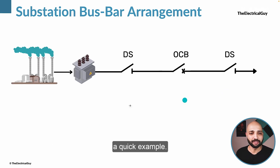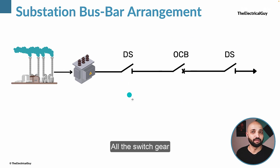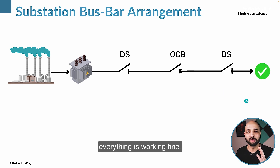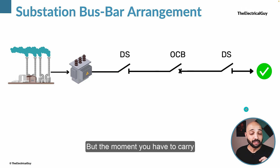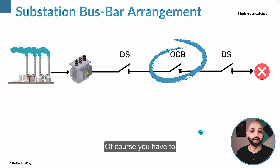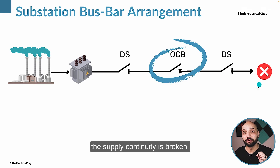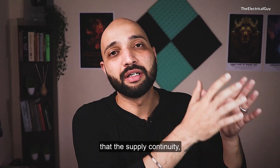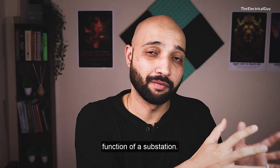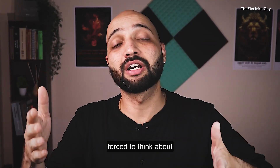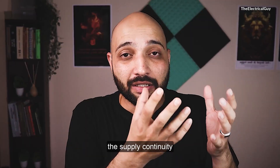Here is a quick example. Let's say we have a generating station, a step-up transformer, and then a switchyard with switchgear — an oil circuit breaker with disconnectors connected at the end. When this breaker is operating, everything is closed and working fine, so supply continuity is maintained. But the moment you have to carry out maintenance on this breaker, you have to take a shutdown, turn off everything, and carry out the maintenance — as a result, the supply continuity is broken. Supply security is one of the most important functions of a substation, but here that function is not being fulfilled.